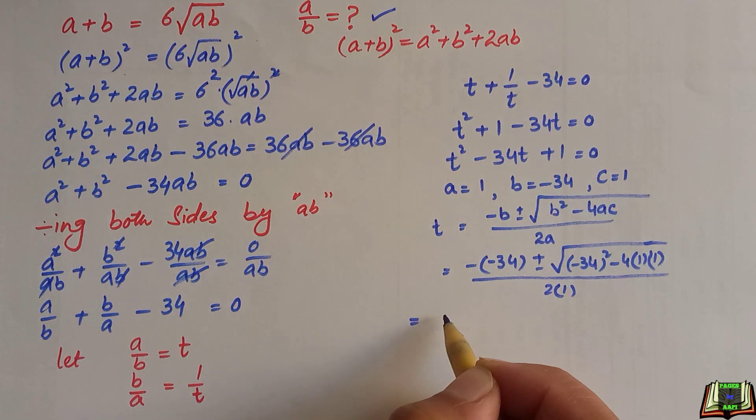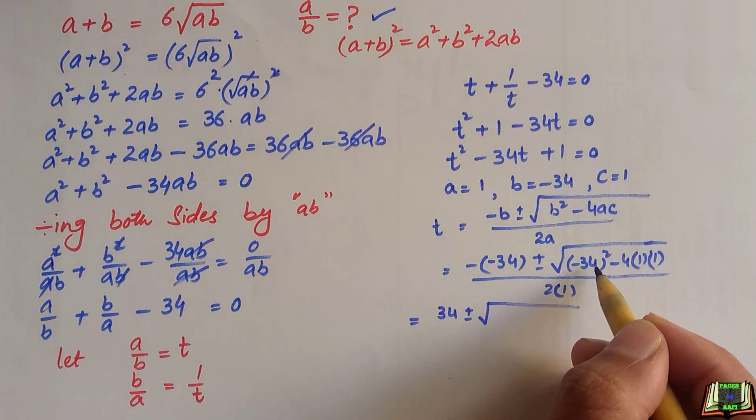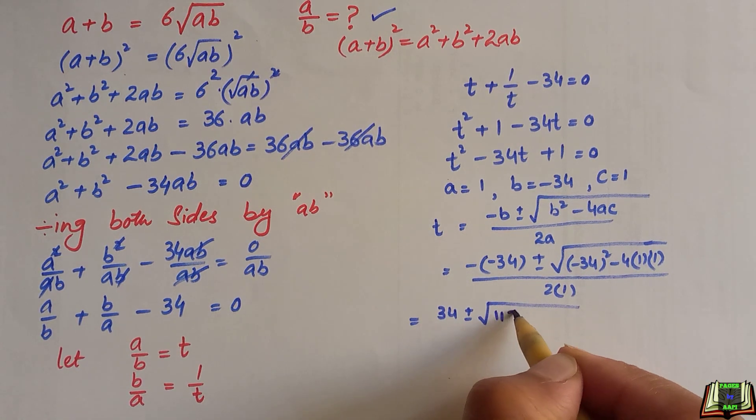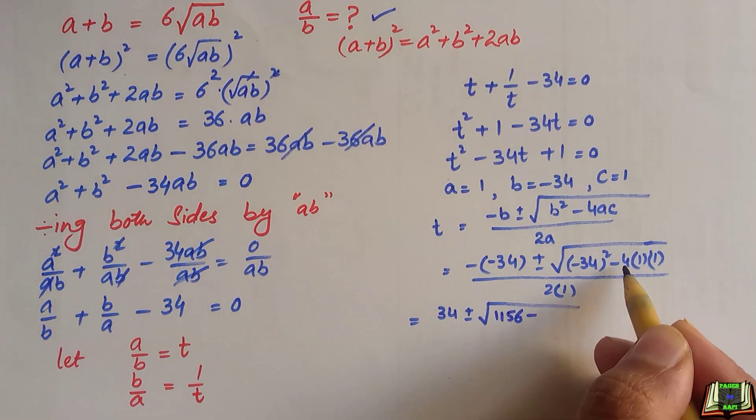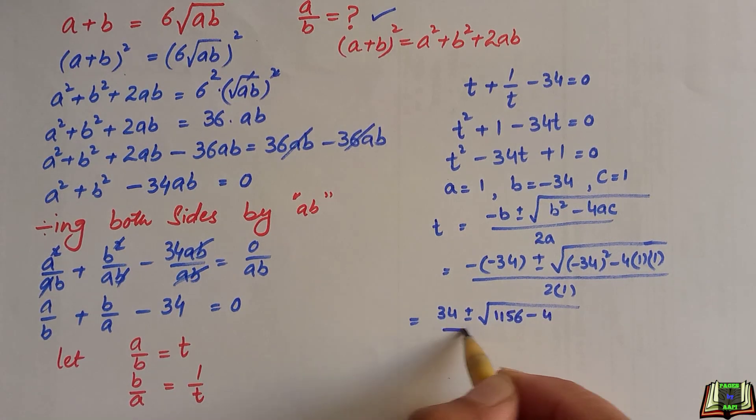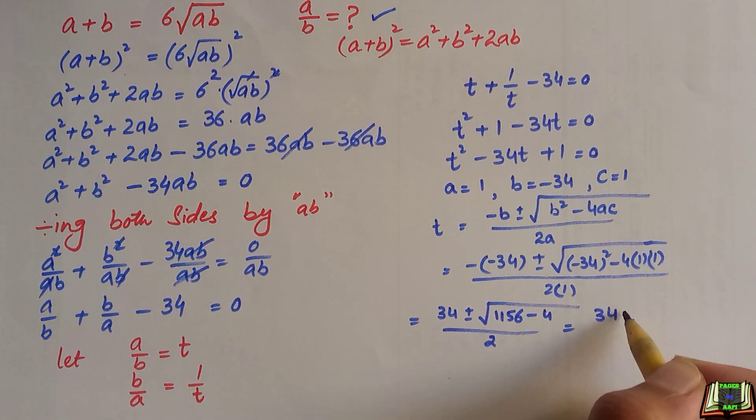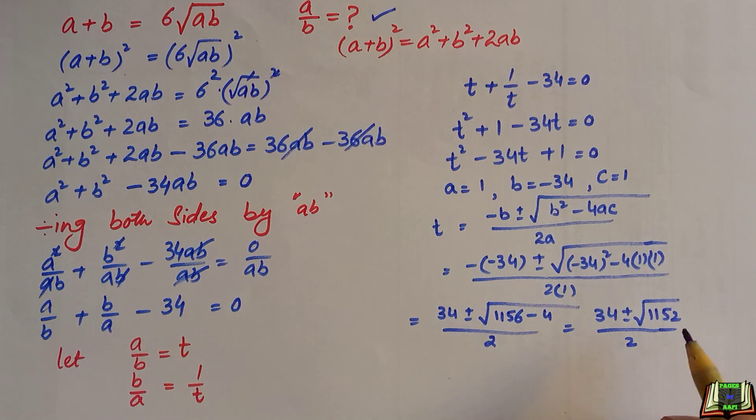Now, this becomes positive 34 plus minus. 34 square is equal to 1,156 minus 4 times 1 is 4 again over 2. After subtracting, we have 34 plus minus root 1,152 over 2.